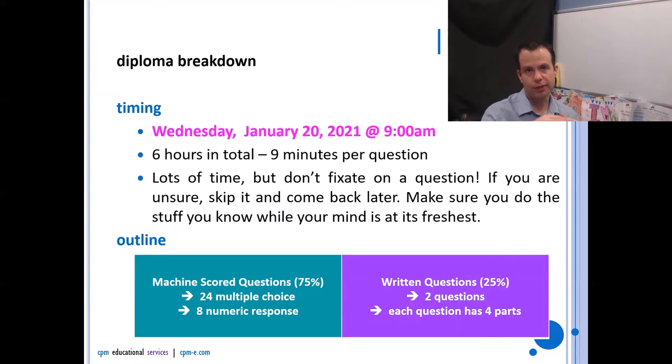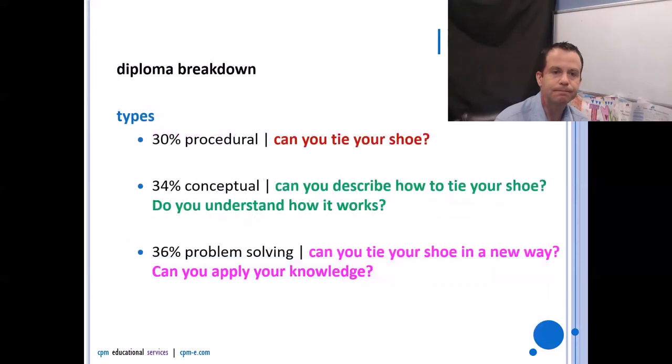All right, so what sorts of questions are you going to be looking at? It's 30% procedural, 34% conceptual, and 36% problem solving. Now procedural questions just mean these are kind of the questions that you first do when you're learning a concept. They're just the kind of rote memory practice, the basic sort of questions. So can you tie your shoe? 34% being conceptual, that gets a little deeper. There's a few more layers with conceptual questions. Now it's more: can you describe how to tie your shoe? Don't just do it, but tell me how to do it. Do you understand the layers involved in tying your shoe? Could you explain it to another person? And then that last section of problem solving: can you tie your shoe in a new way? Can you apply your knowledge?